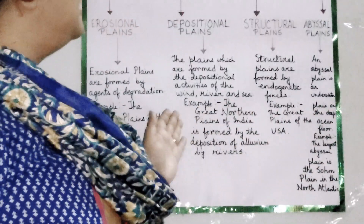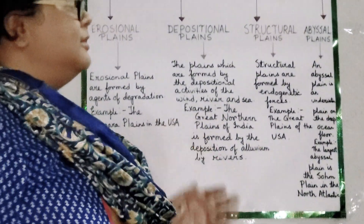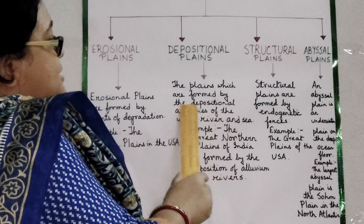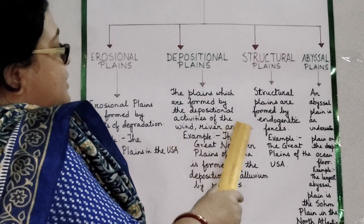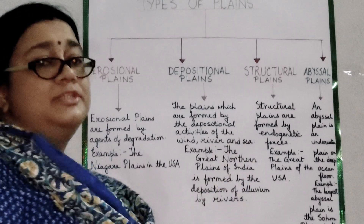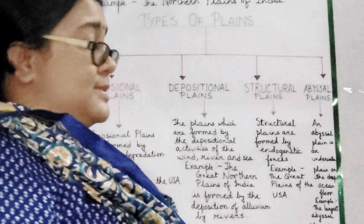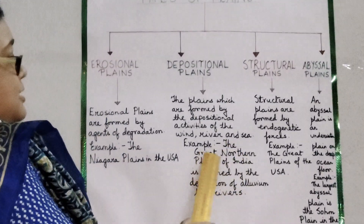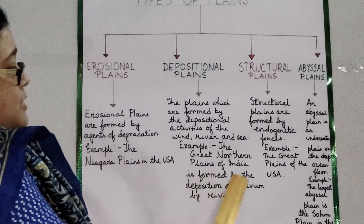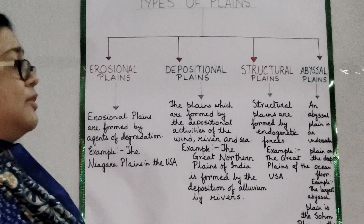The second type is the Depositional Plain. It is clearly written in this chart that plains formed by the depositional activities of wind, river, and sea are depositional plains. For example, the Great Northern Plains of India are formed by the deposition of alluvium by rivers.